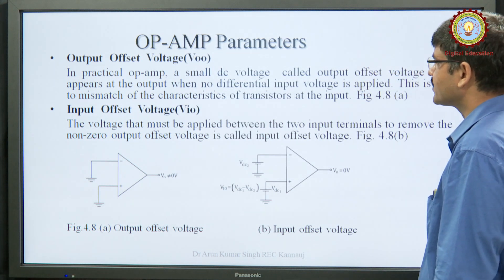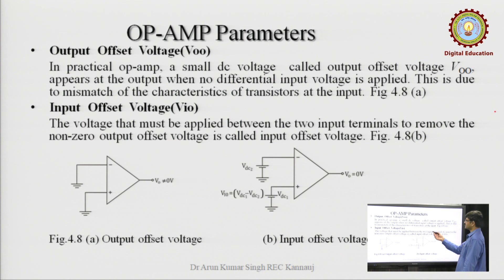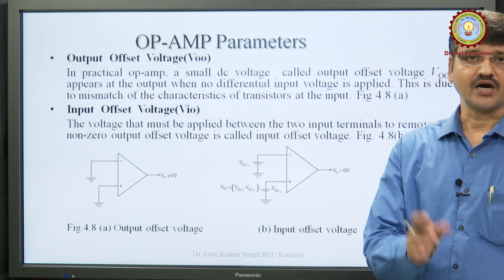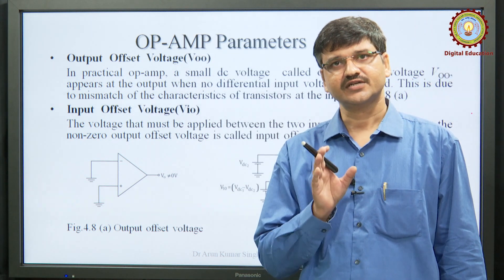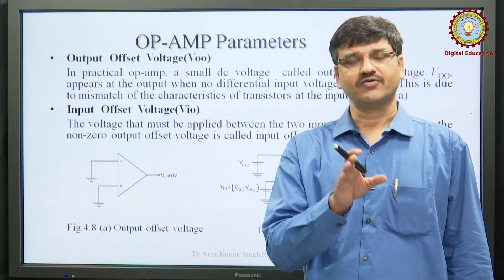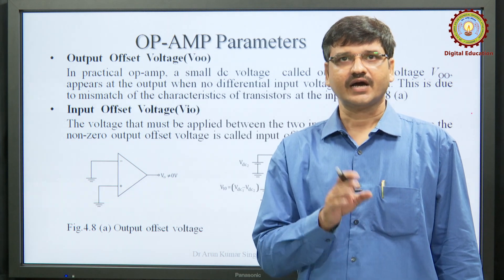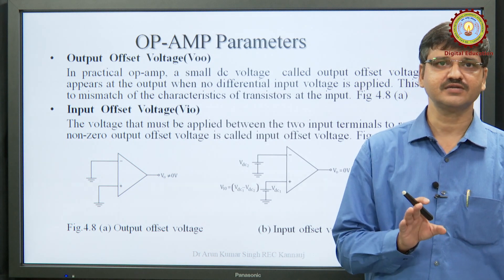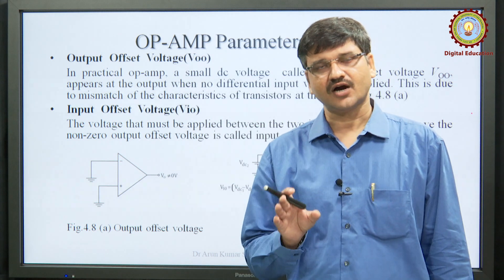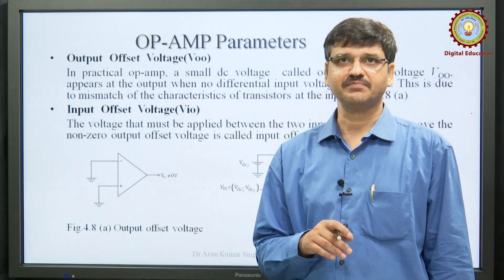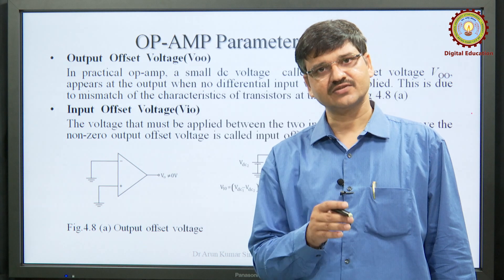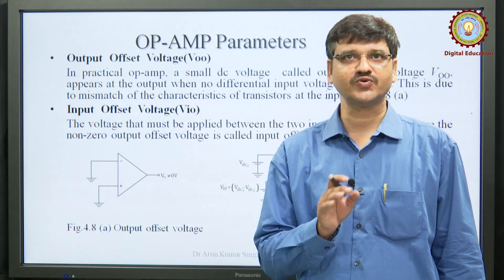The fourth parameter is output offset voltage. Since the op-amp amplifies the difference signal at both input terminals, ideally if both input terminals are grounded, the output should be zero. But this is not possible in all critical op-amp circuits because of imbalance in transistor characteristics. The value obtained at the output when both input terminals are grounded is known as the output offset voltage.